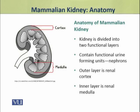The kidney is divided into two functional layers which contain the functional urine-forming units, i.e. nephrons. The outer layer is called the renal cortex, while the inner layer is called the renal medulla.